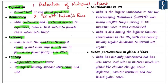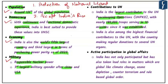India being a large country, a democratic country, a robust economy, and a military superpower are enough to support its candidature in the United Nations Security Council. India is the largest contributor to the United Nations peacekeeping operations with nearly 180,000 troops serving in 44 missions since the UN was established. India is also among the highest financial contributors to the UN, making regular donations to several UN organs.